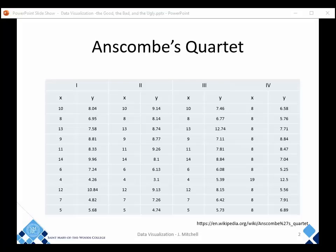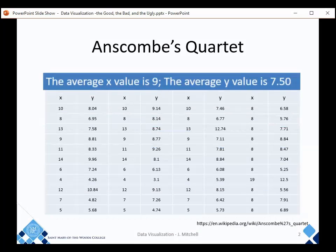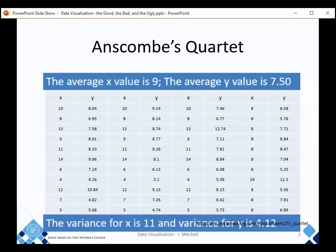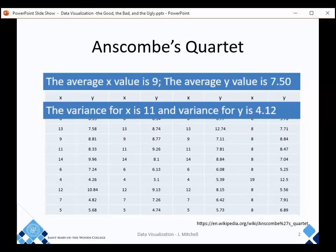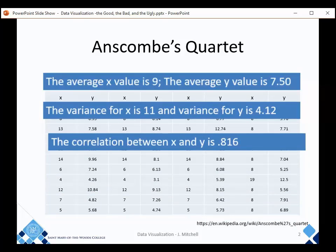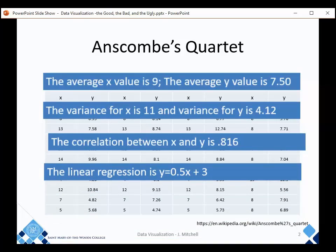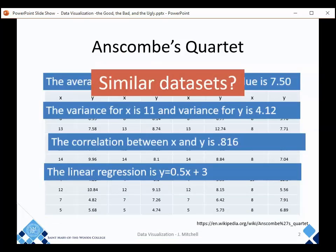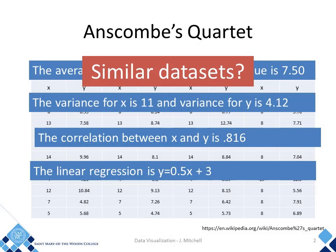First, let's look at Anscombe's Quartet. These four data sets seem similar. The averages are the same, the correlations the same, even the linear regression equation is the same. So statistically, I might conclude that these four data sets are very similar, right?